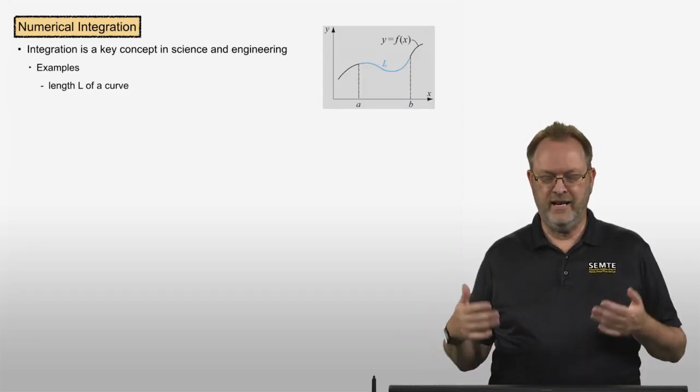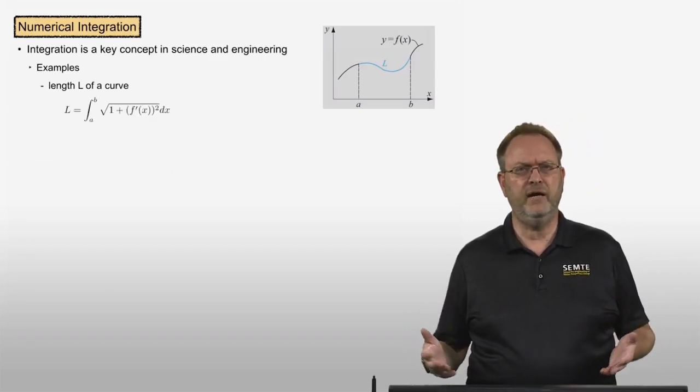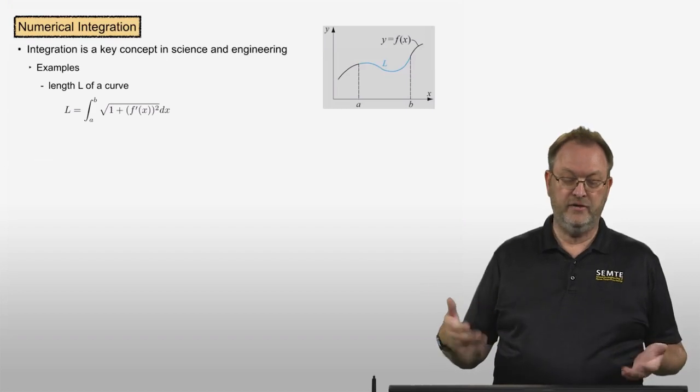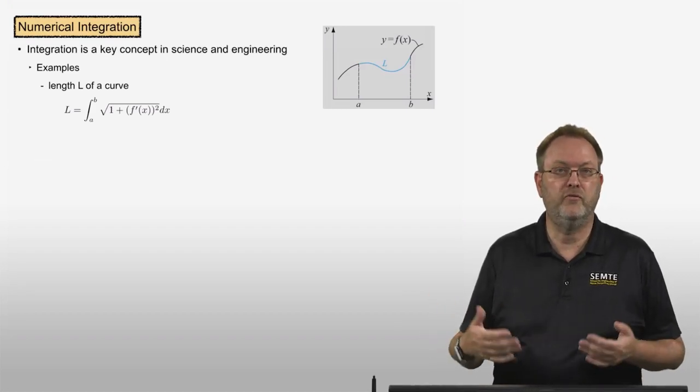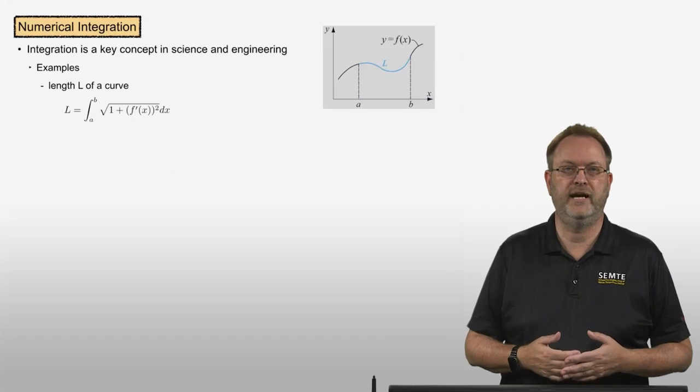We want to calculate the length of a curve, the arc length, which is given by the integral from a to b of the square root of 1 plus the derivative of the function with respect to x squared.